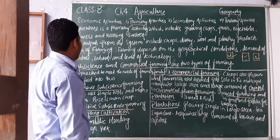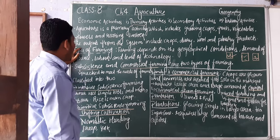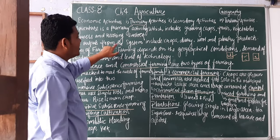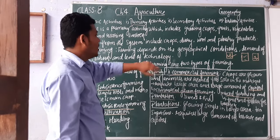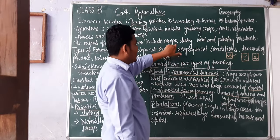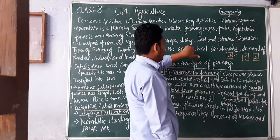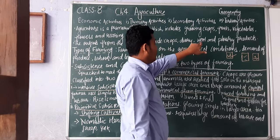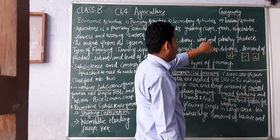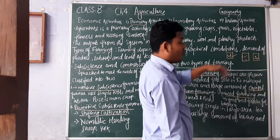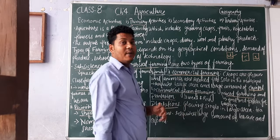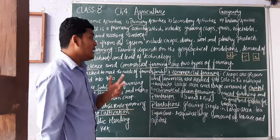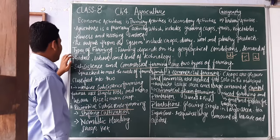The output from agriculture includes crops, dairy products, fruits, produce, meat, and eggs.